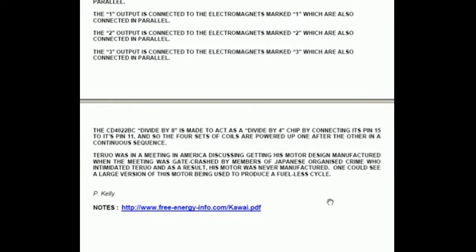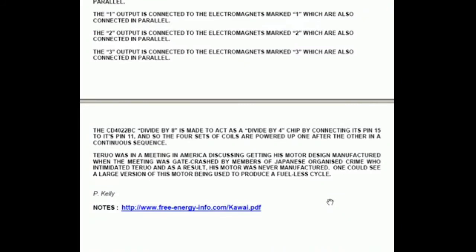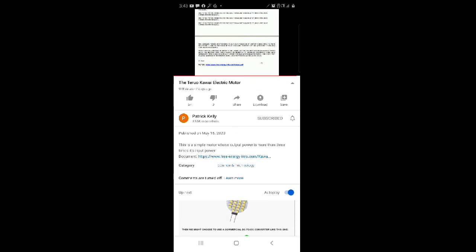Teru was in a meeting in America discussing getting his motor design manufactured when the meeting was gate crashed by members of Japanese organized crime who intimidated him to such a degree that as a result his motor was never manufactured. One could see a large version of this motor being used to produce a fuel-less cycle possibly motorcycle possibly electrical bicycle. The notes that I'm trying to read from here are available to you if you want to download them. They're at www.freeenergyinfo.com forward slash k-a-w-a-i dot pdf